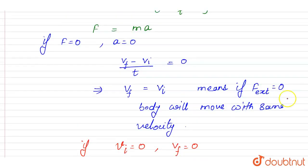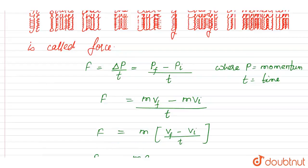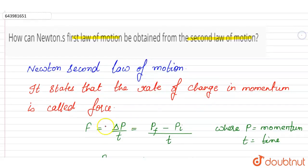So, here we see that this statement is the first law. That means, if external force is 0, the body will move with the same velocity — meaning if the initial velocity is v_i, the body will remain at velocity v_i. And if the velocity is 0, meaning the body is at rest, it will remain at rest. So these are Newton's first law statements, and we have derived Newton's first law using Newton's second law. So this is our answer.